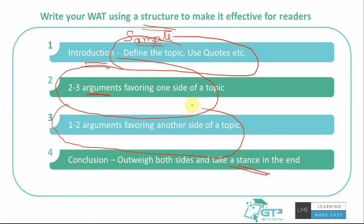If the topic does not naturally have two sides — for example, if the topic states that public transportation is the key solution to traffic congestion in developing countries and asks how to implement it — then the solution is already given and you are asked how to execute it. In this case, you should not debate whether public transportation is right. Instead, stick to the point that yes, public transportation is the way forward, and focus on how to implement it.